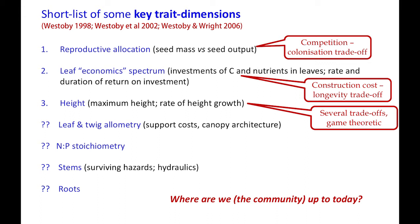In the 2002 paper and the 2006 update, we waved our arms a bit and said: what other trait dimensions do we need to understand? There's clearly a lot of variation among species in leaf size and the allometry of leaves and twigs — relating to support costs and canopy architecture — but we didn't yet understand the key trade-offs there. At the time there was huge activity in nutrient stoichiometry — think of the book by Jim Elser and Bob Sterner. Clearly there's a lot of variation in stems, hydraulics, and survival. And clearly roots. So it's an interesting question today to revisit this list and ask where we're up to, and what we need to include in vegetation models.